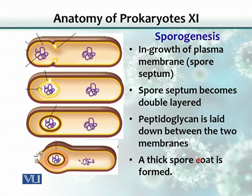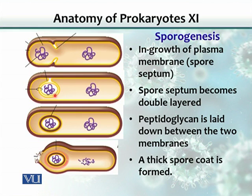Here is the process of sporogenesis. What happens is that DNA replicates in the cell, and then the cytoplasm — basically the plasma membrane — forms an in-growth. This in-growth becomes a kind of spore septum. And then in the second step, this spore septum assumes a double layer.